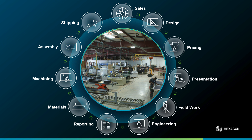Although I am only covering the CabinetVision product in this presentation, it is important to note that the AlphaCam, WorkPlan, and Leica products in the Hexagon portfolio are very important to the woodworking processes and are linked closely with CabinetVision to provide seamless solutions to our customers. In this presentation, I am going to be covering the primary processes that CabinetVision offers solutions for: design, pricing, presentation, fieldwork, engineering, reporting, and machining.